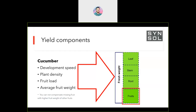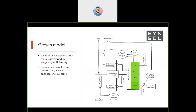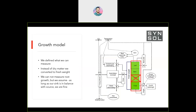We took the standard model from Wageningen University and split it into what we can measure and what we're interested in. We're interested in fruits. We can't measure roots, but we can measure leaf, stem, and fruits — by weighing them, using optics, or computer vision, though vision requires more skill to program and has issues with light. By weight, we can measure leaf, stem, and fruits because this is the hanging part of the plant.